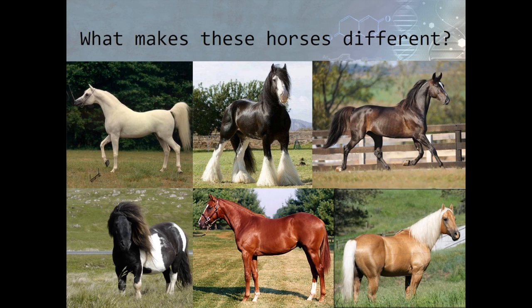Look at their color, size, body structure, and any other features you might notice that are different. These are obviously different breeds of horses, but what makes breeds of a certain species different from one another?